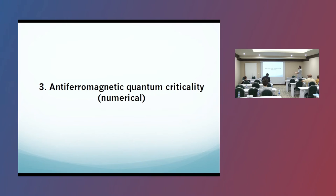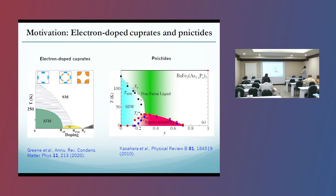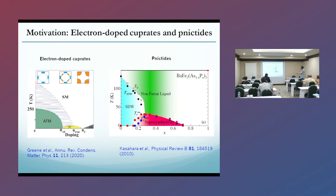Lastly I'll briefly talk about antiferromagnetic quantum criticality. This is a numerical work we did recently. The motivation is electron-doped cuprates and nickelides. Here I show the phase diagrams of these two materials. For the electron-doped case, we have an antiferromagnetic phase and a very large region with strong antiferromagnetic fluctuations — close to that we have the strange metal phase.